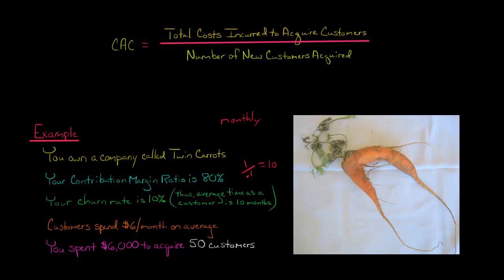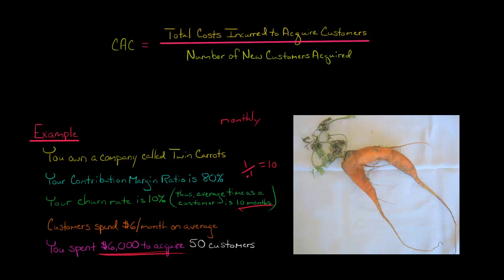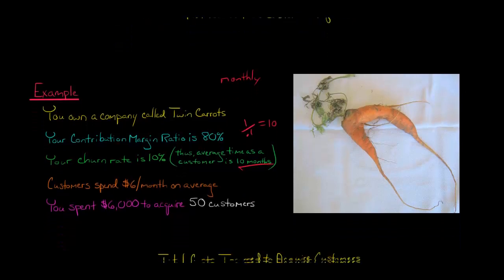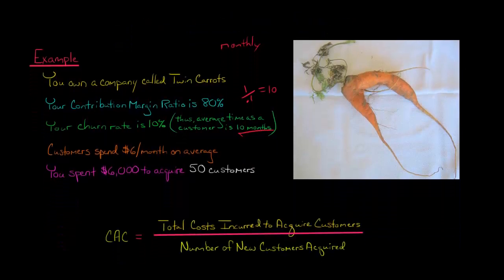Customers spend $6 a month on average on your Twin Carats, and you spend $6,000 to acquire 50 customers. Maybe you ran some targeted advertising online and acquired those 50 customers.